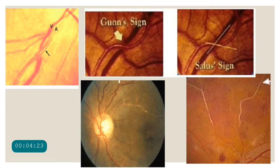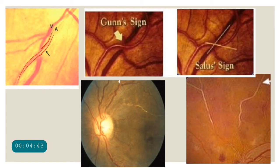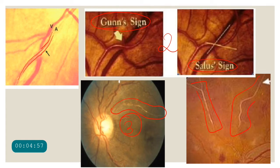In the images shown, we can see AV changes and broadening of the arterial reflex — the blood column changes color and the vessel wall becomes more obvious, which is the broadening of the arterial reflex. Stage 2 shows the Gunn sign, Salus sign, and Bonnet sign. Stage 3 shows copper wiring, and stage 4 shows silver wiring, very similar in appearance to sclerosis of the vessel.